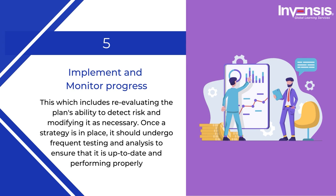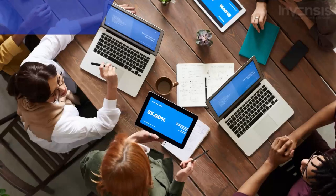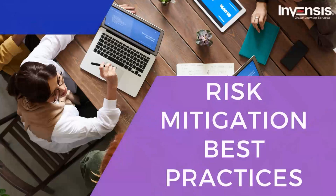Fifth is to implement and monitor progress, which includes reevaluating the plan's ability to detect risk and modifying it as necessary. In business continuity planning, plan testing is essential. Once a strategy is in place, it should undergo frequent testing and analysis to ensure it is up to date and performing properly, accounting for any shifts in risk and altering priorities.